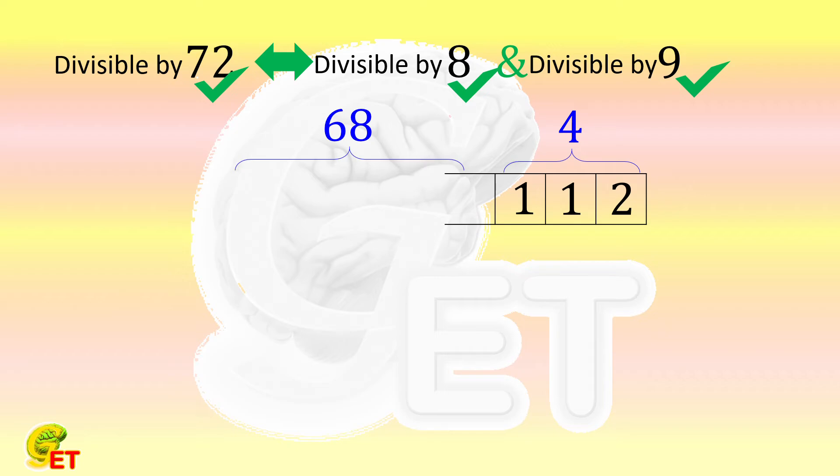To maximize n, the number should have as many places as possible. So the maximum value of n is 68 places of 1, followed by 112.